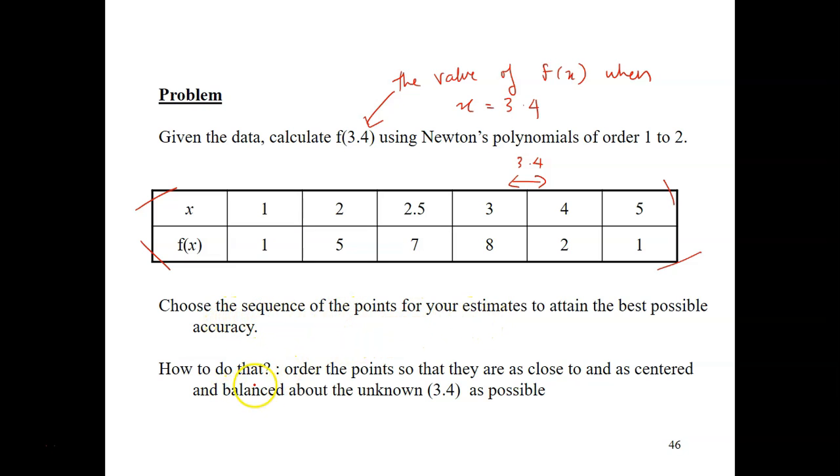How to do that? You need to order or rearrange the points so that they are as close to and as centered and balanced about the unknown, which is 3.4, if possible.